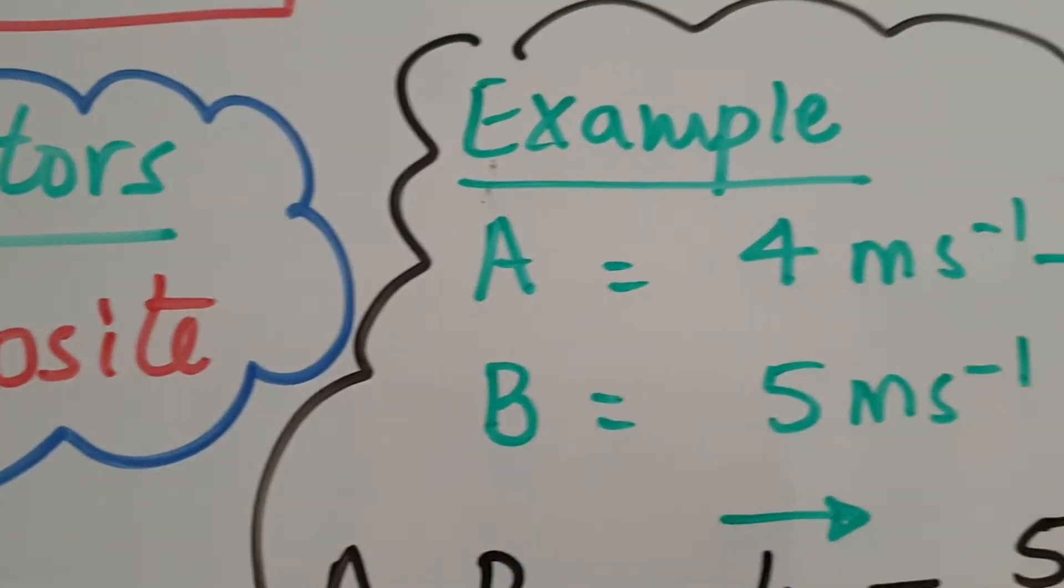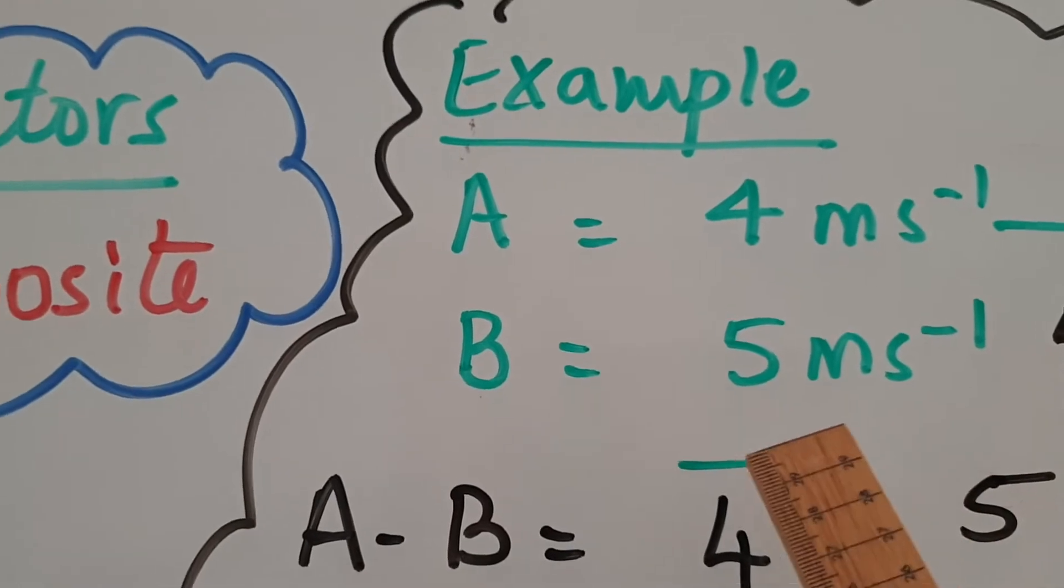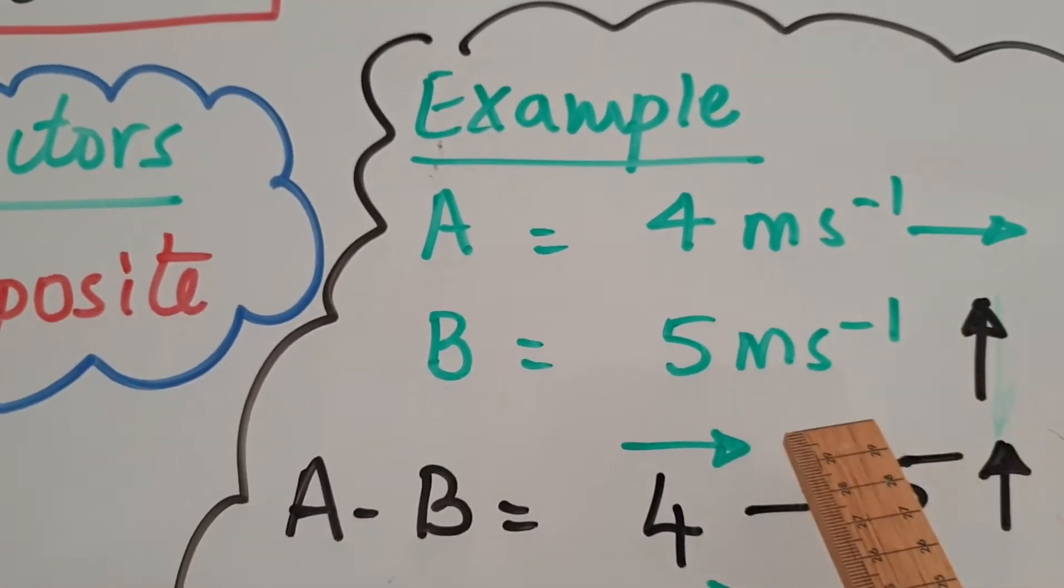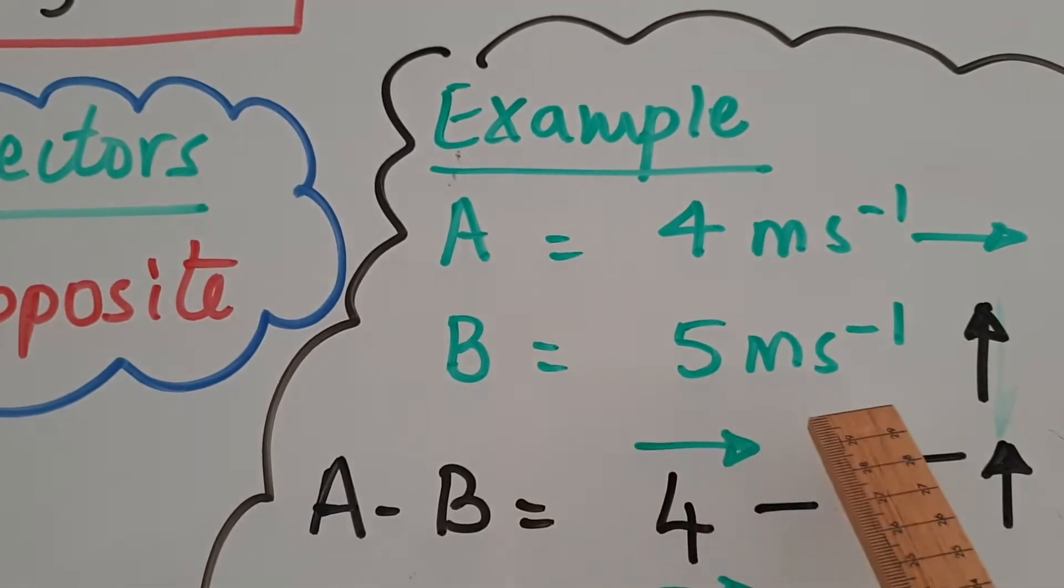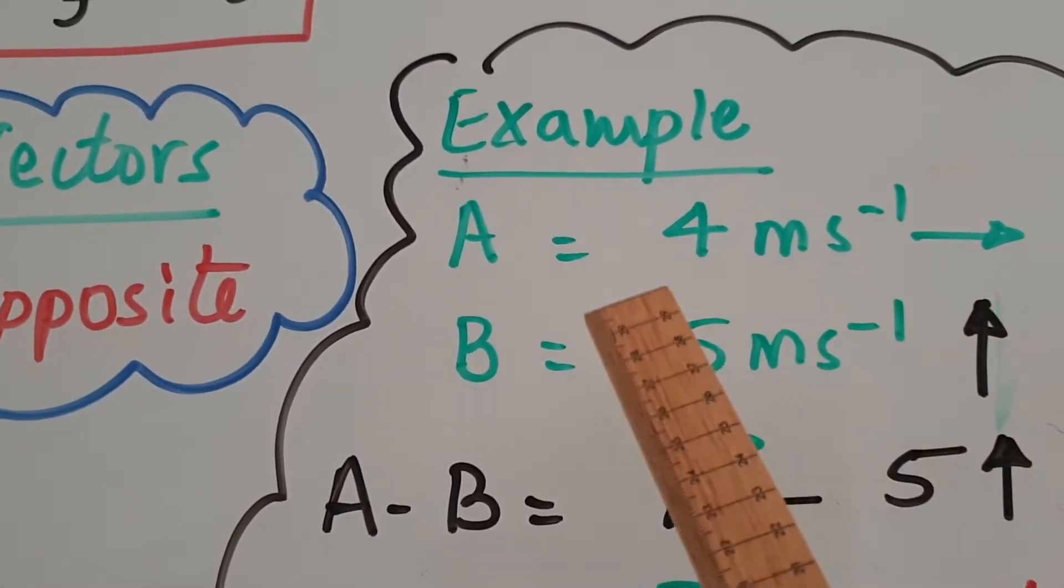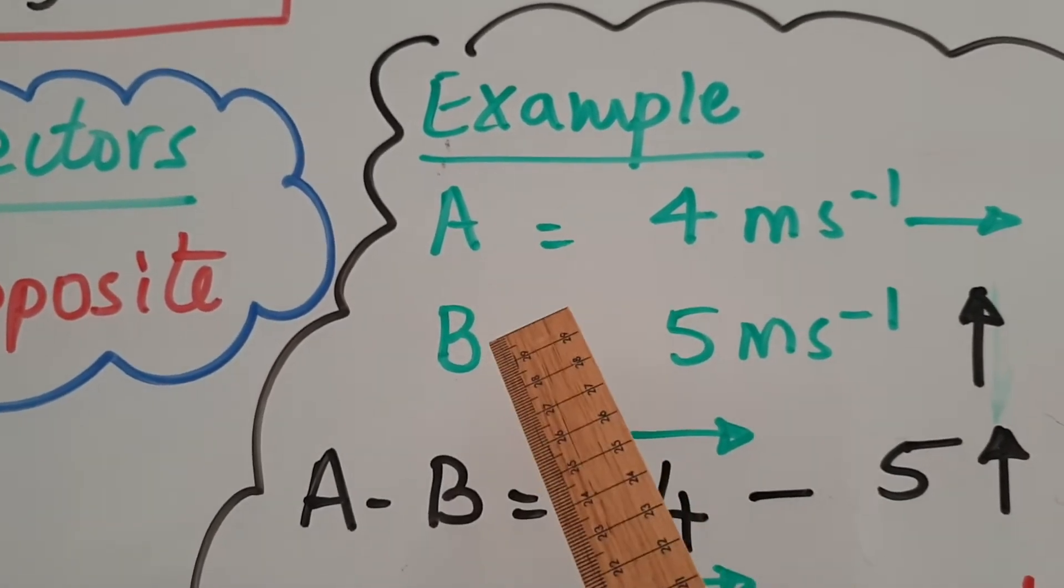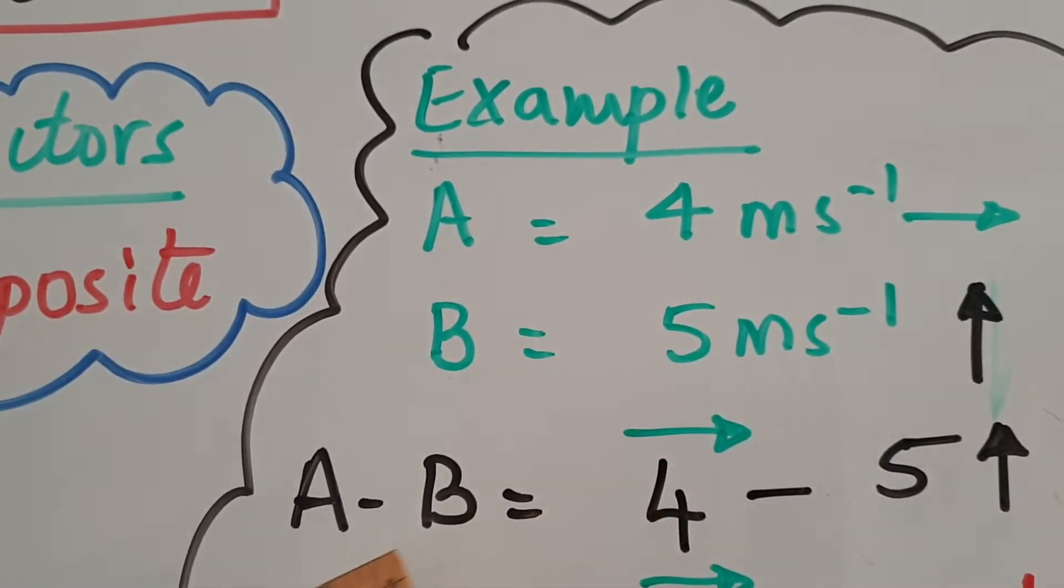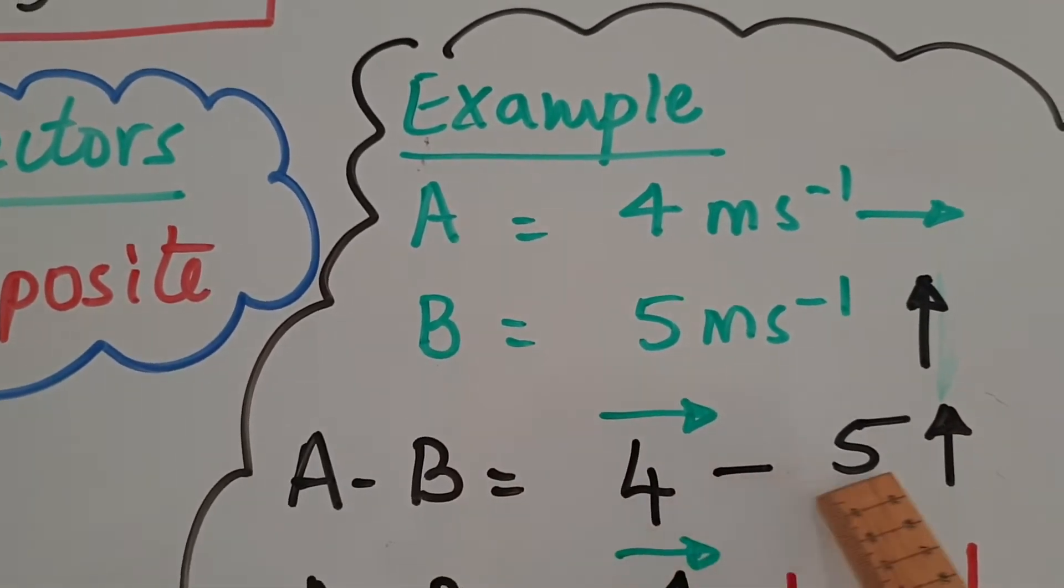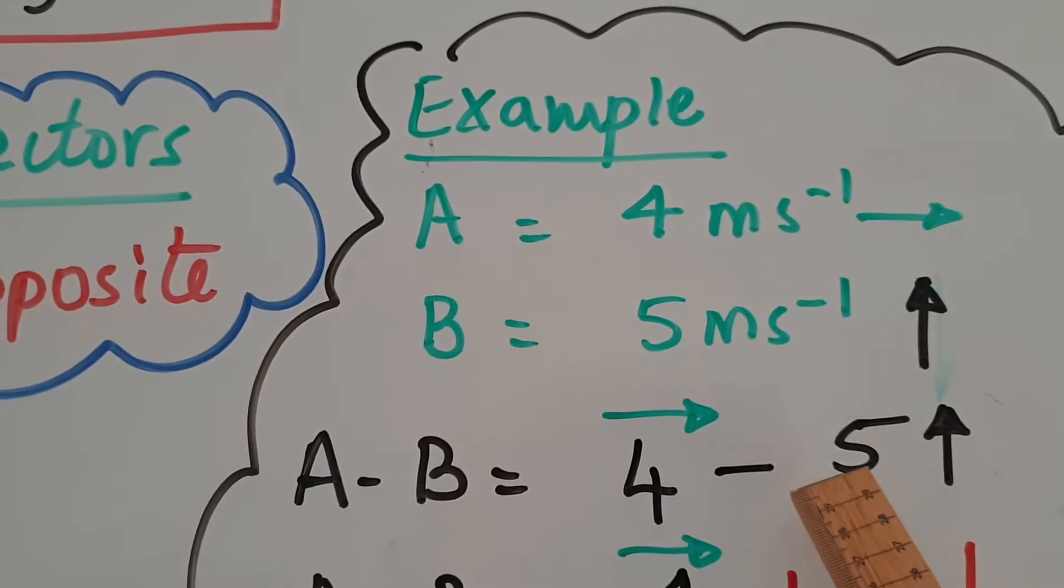So let's see how that is done. Here's an example. Here are two vectors, a and b. Let's say a is 4 meters per second going to the right and b is 5 meters per second going vertically up. So if we have to find the difference between a and b, we are subtracting them. So a minus b is 4 in that direction minus 5 in the upward direction.